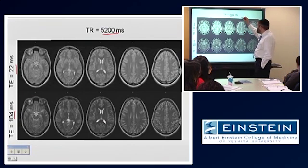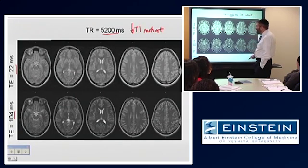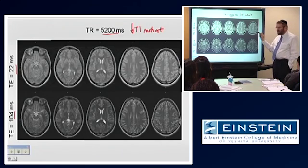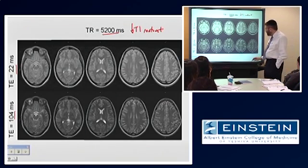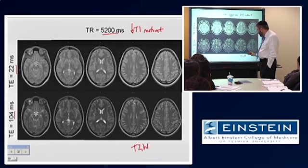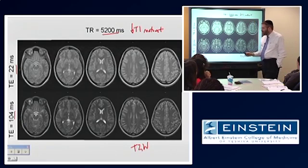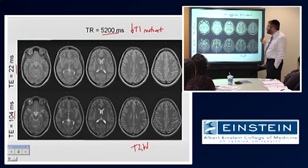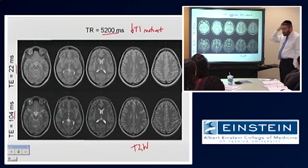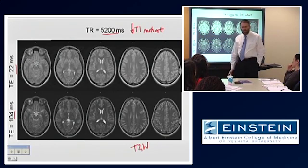104 milliseconds is pretty long. So this is an image where we have a lot of T2 information. This is an image where we are essentially suppressing that T2 information. Both of these are acquired at what is a pretty long repetition time. This is going to have the effect of minimizing T1 contrast.